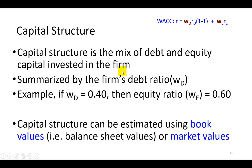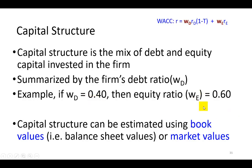Remembering that total capital is equal to debt plus equity, it means therefore that if we find WD, the debt ratio, to be 40%, then automatically we know the equity ratio is going to be 60%. If the debt ratio is 20%, then the equity ratio is going to be 80%.